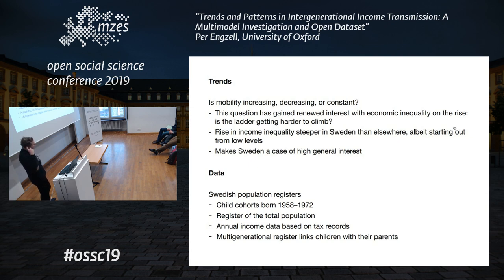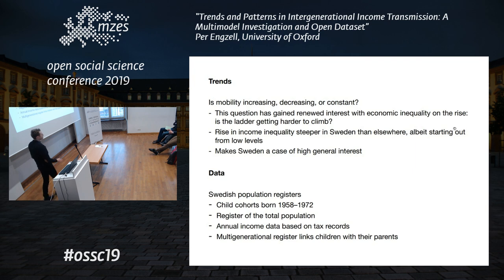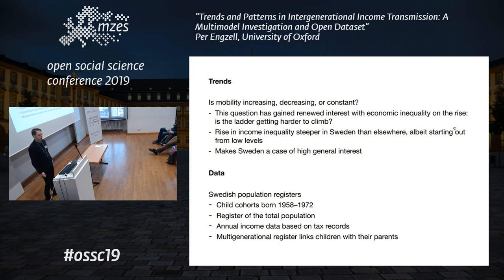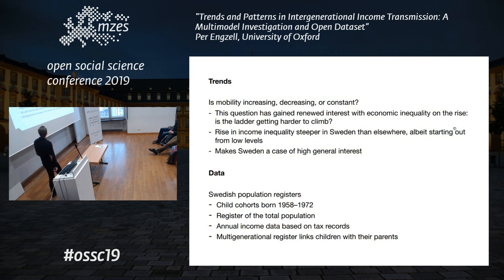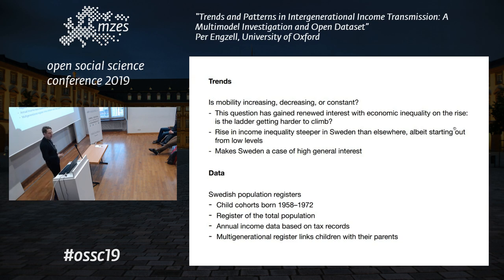We're studying 15 cohorts born from 1958 to 1972. We have population register data — administrative data covering the whole population, so each birth cohort is about 80,000 individuals. We have annual income data throughout people's lives based on tax records, and we also have data linking identified pairs of parents and children.